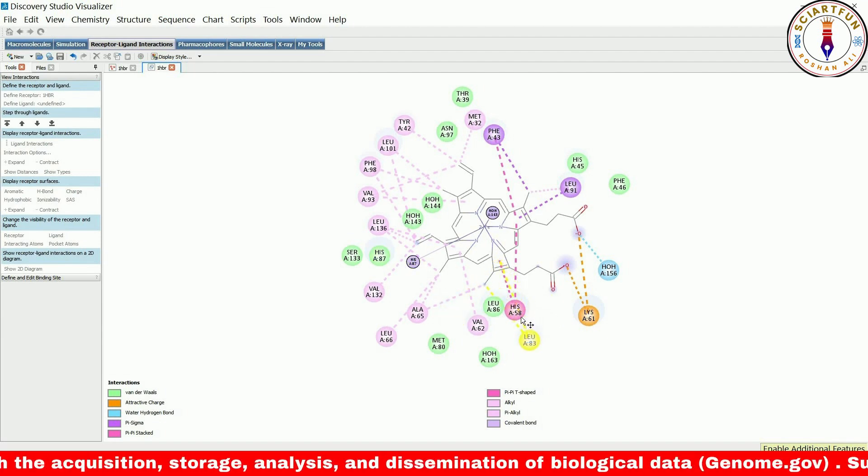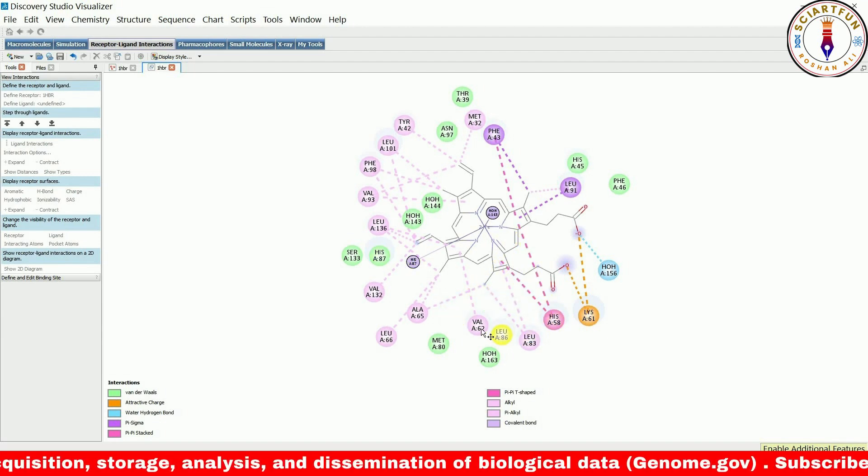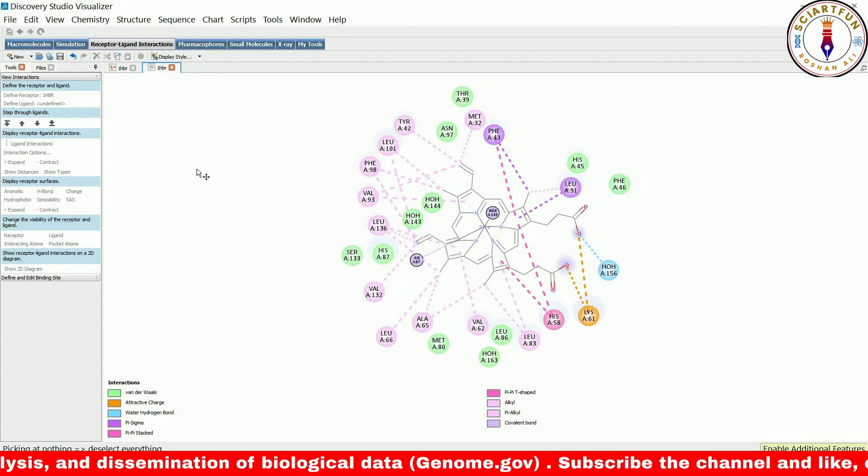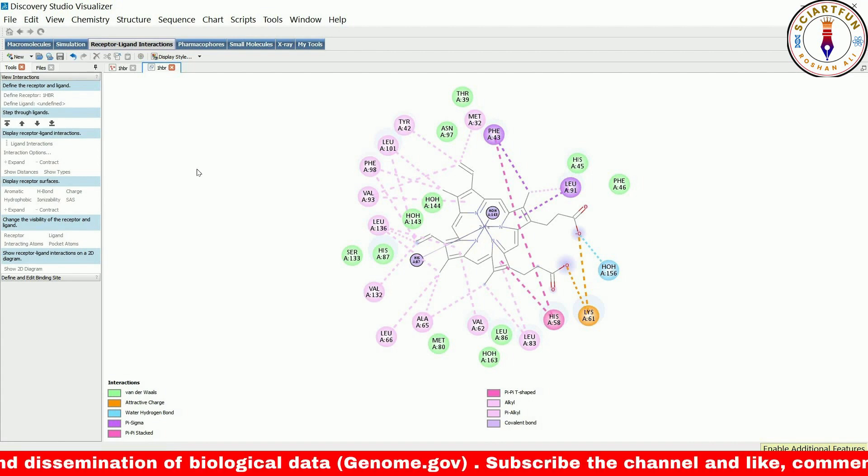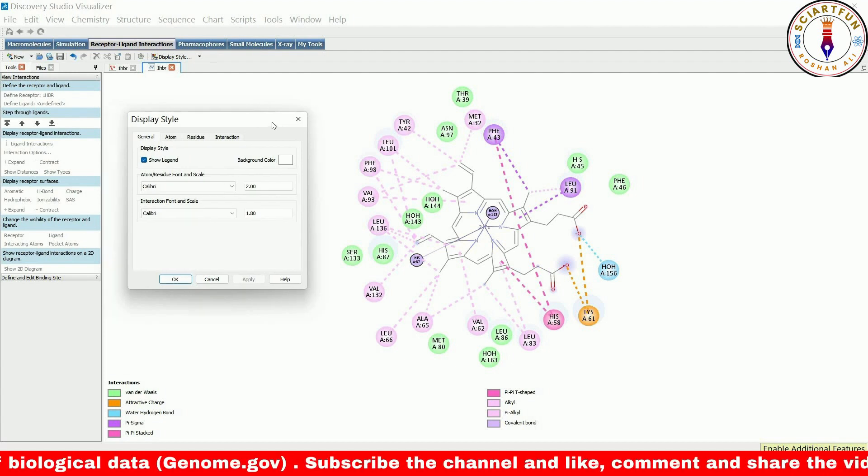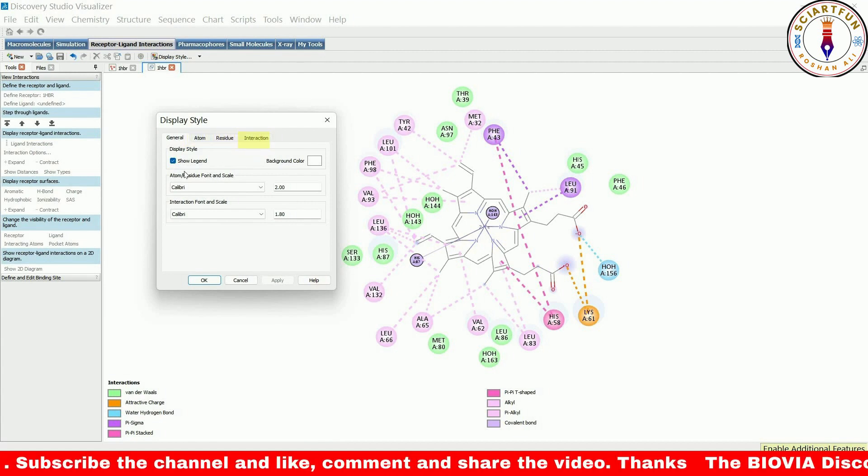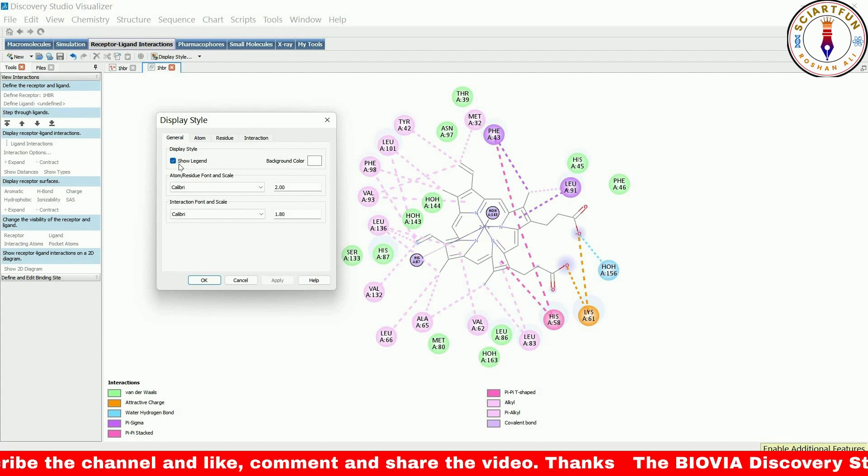Next, we will show you how to change the appearance of the 2D structure using the display style dialogue options. You can open this dialogue by going to the view menu or by right-clicking. This dialogue has four tabs: general, atom, residue, and interactions. We will go over the use of each tab one by one.